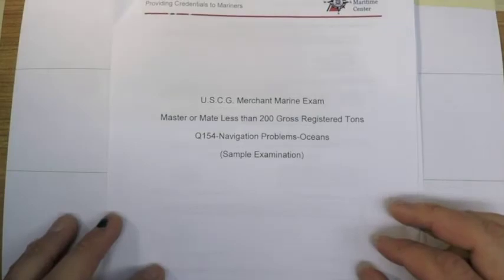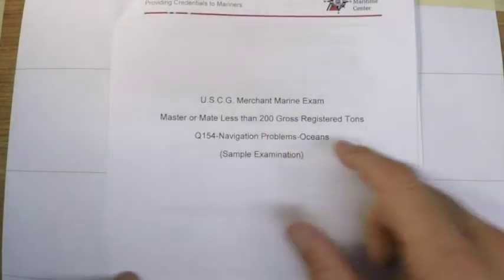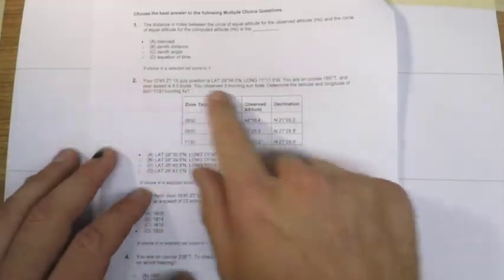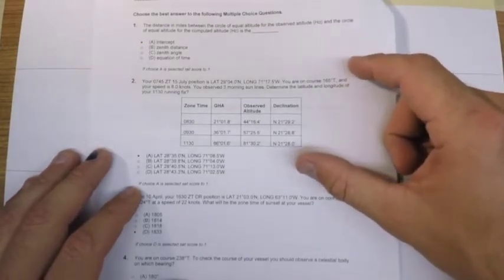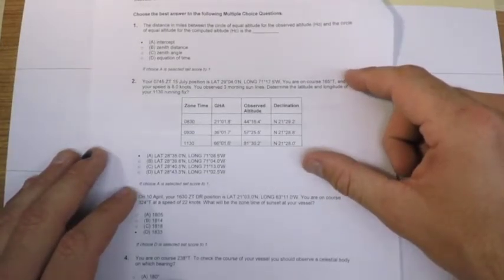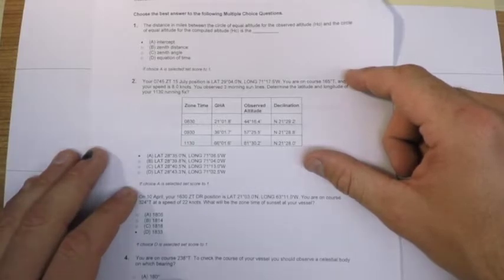Okay, welcome back to the video series for the 200 ton oceans sample exam from the National Maritime Center. In this video we are going to solve question number two. This will be a solution in two parts. The first video will show the solution through HO 229 and the second video will show the plotting of this on a universal plotting sheet to determine the running fix time.